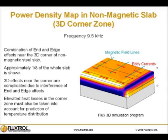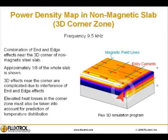Power density map in the corner zone of a non-magnetic slab. Here we see a combination of end and edge effects near the 3D corner of a non-magnetic steel slab. Approximately one-eighth of the whole slab is shown. As you can see, 3D effects near the corner are complicated due to interference of end and edge effects. Elevated heat losses in the corner zone must also be taken into account for prediction of temperature distribution.